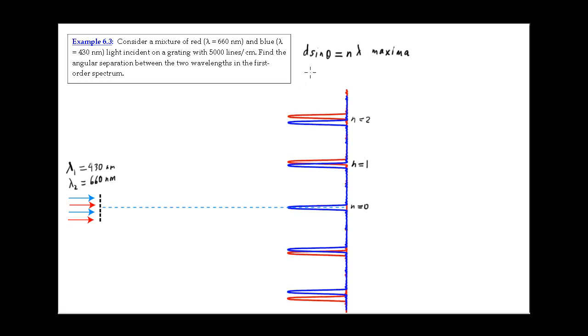So in this case, we want to look at n equals 1, and really all this problem amounts to is figuring out from this equation. Well, d sine theta for the first order will just be lambda. That's for n equals 1.